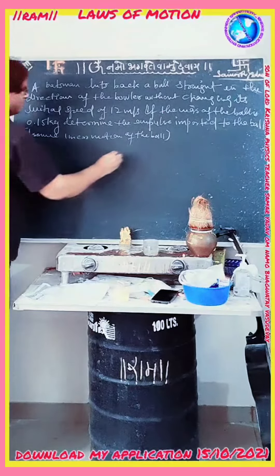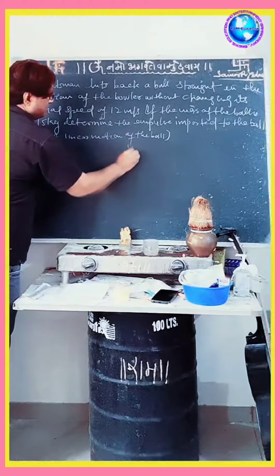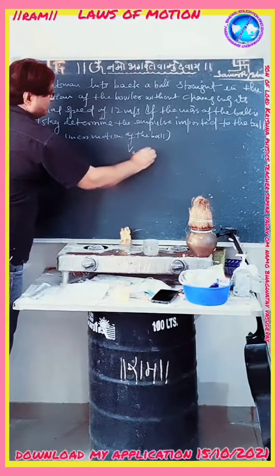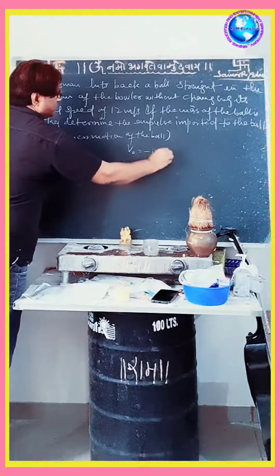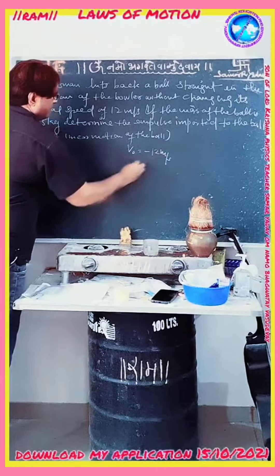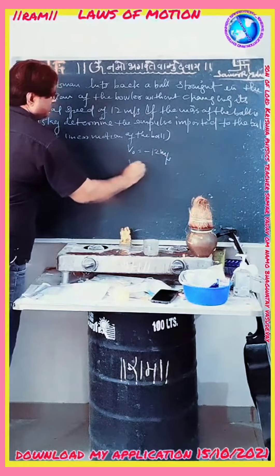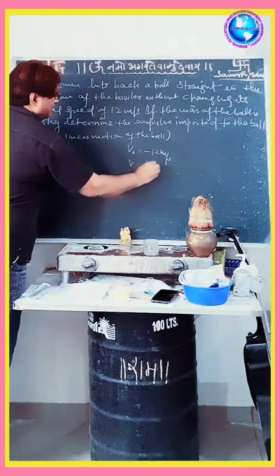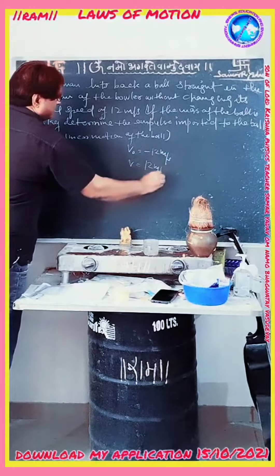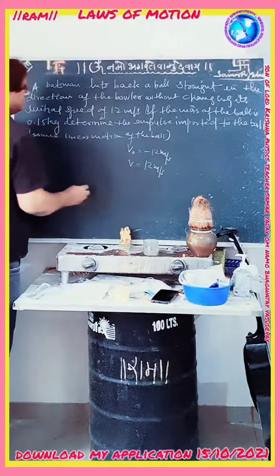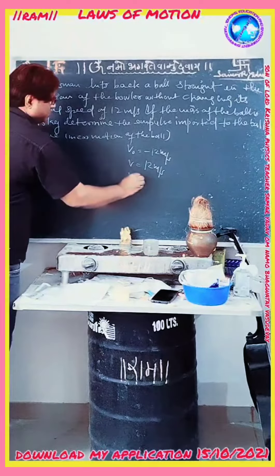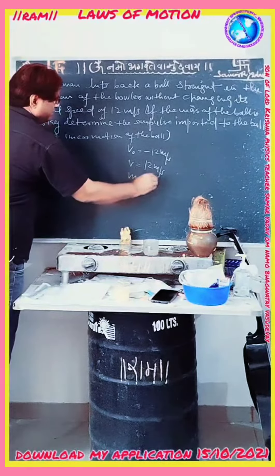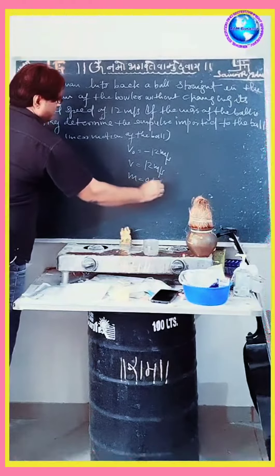Now here, the initial velocity V₀ is equal to minus 12 meters per second, and V is equal to 12 meters per second as the final velocity. And mass is given: M is equal to 0.15 kg.